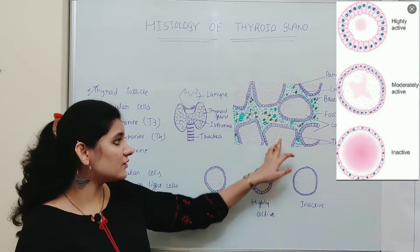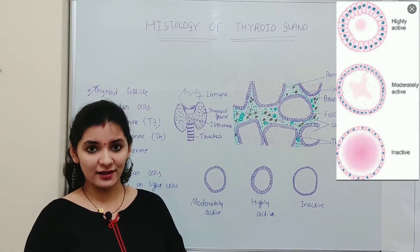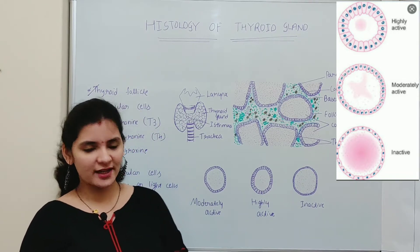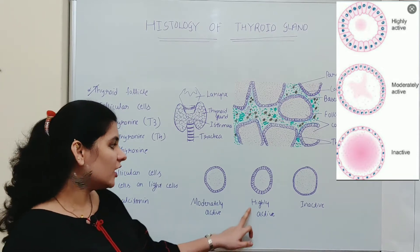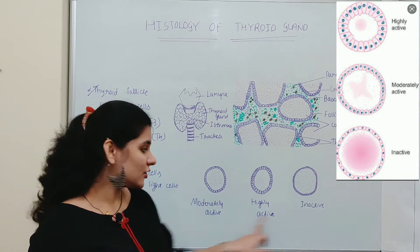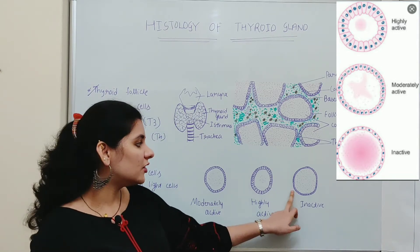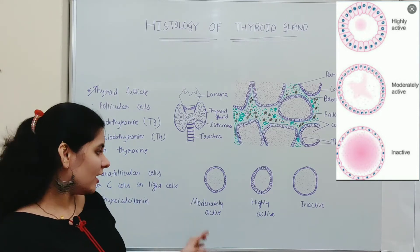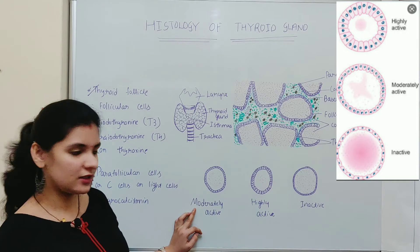The shape of the follicular cells depends on the activity of the thyroid follicle. The thyroid follicle shows three types of activity: moderately active, highly active, and inactive. Based on the activity of the thyroid follicle, the shape of the follicular cells varies. We will discuss them one by one. The first is the thyroid follicle showing moderate activity.